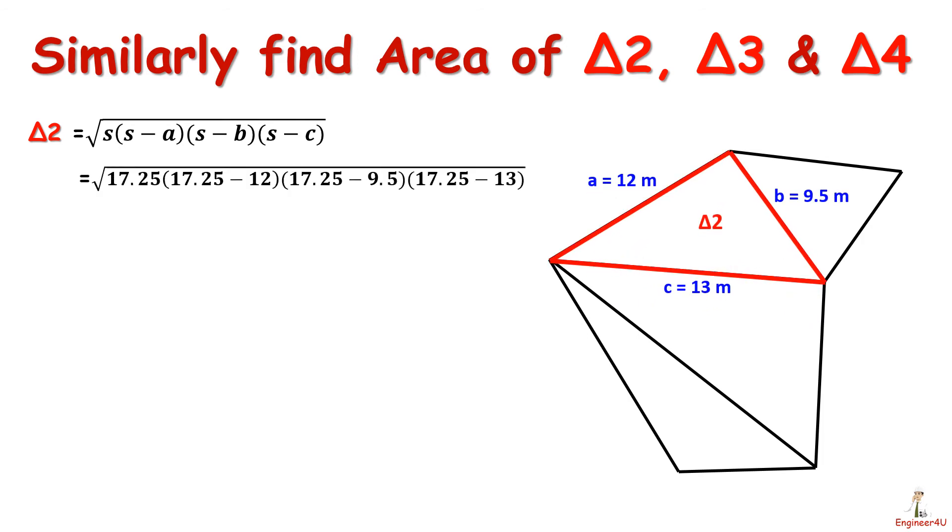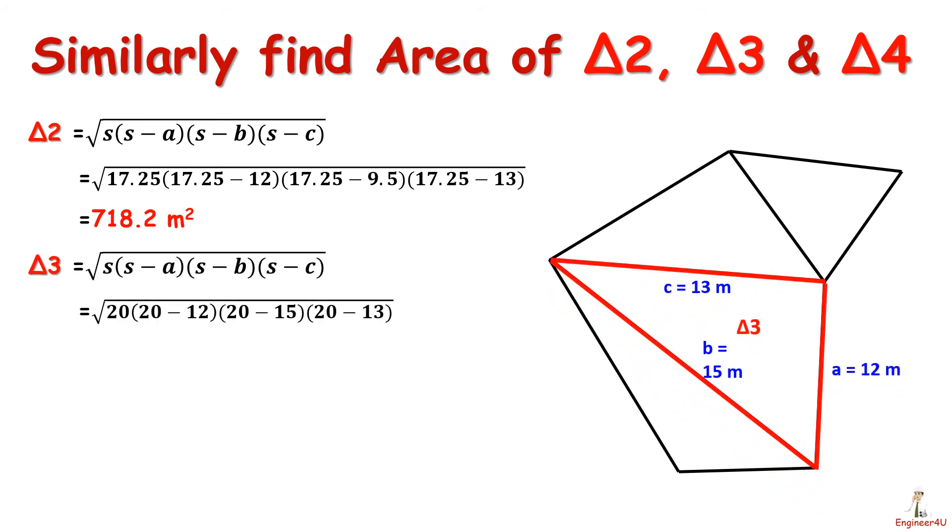That is 718.2 meter square. By putting corresponding values of triangle 3 in Heron's formula, we get area of triangle 3.